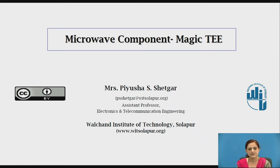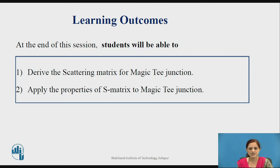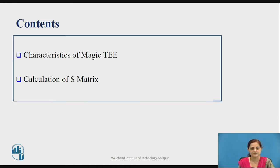Good afternoon everyone. Myself Piyusha Shedgar. Today we will see the topic: microwave component Magic T. These are the learning outcomes. At the end of this session, students will be able to derive the scattering matrix for Magic T junction, and they will be able to apply the properties of S matrix to Magic T junction. These are the contents.